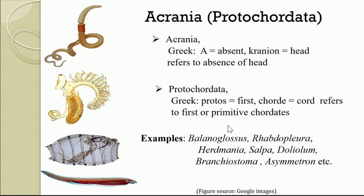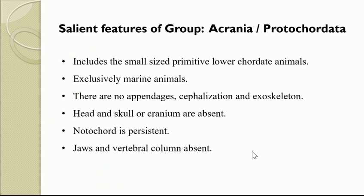The examples of this group Acrania or Protochordata include Balanoglossus, Rhabdopleura, Herdmania, Salpa, Doliolum, Branchiostoma, and Asymmetron. These are a few examples of primitive chordates which come under the group Acrania or Protochordata. First of all, the group Acrania or Protochordata includes small-sized primitive lower chordate animals. These are small-sized animals, and they are called primitive lower chordates because they show primitive characteristics compared with higher chordates.